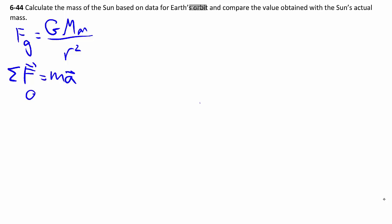So F equals MA where A is equal to AC, which is V square over R. Sketching out a situation here in this case, we're talking about the Sun, which is my big mass. And there's a small little dog we call Earth.